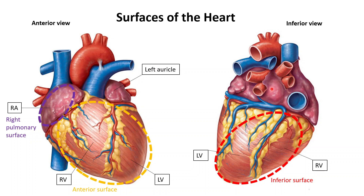This fleshy part is called the left atrium, and this part right here is the right atrium. Notice how there are four vessels going into the left atrium — these are the pulmonary veins, oxygenated veins going into the left atrium. For the right atrium, there's the superior vena cava and the inferior vena cava, and both enter the right atrium.